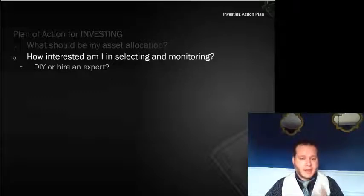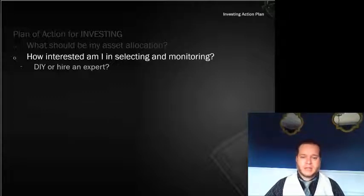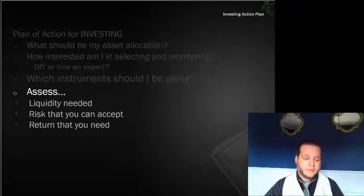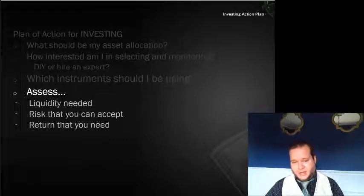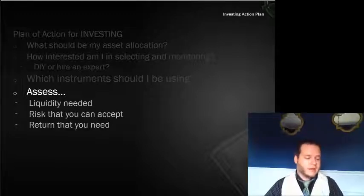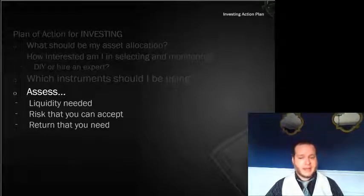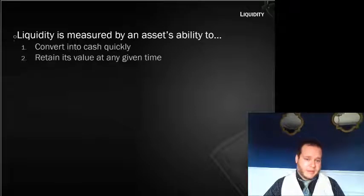You need to think about how much risk you're willing to take. Next, how interested are you in selecting and tracking your investments — do you want to do it yourself or hire an expert? There are cost-effective ways to get expert help. Which instruments should you use — stocks, bonds — that's all part of your asset allocation. Lastly, consider how much liquidity you need, how much risk you can accept, and what rate of return you need. You can calculate the required interest rate with a time value of money problem.